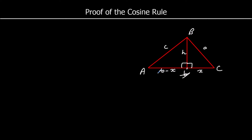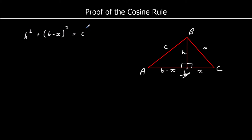Now I've got two right-angled triangles, both labelled. I'm going to write down Pythagoras's theorem for both of them. For the triangle on the left: H squared plus (B minus x) squared equals C squared. And for the other right-angled triangle: H squared plus x squared equals A squared.